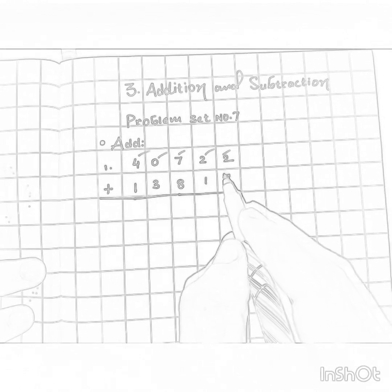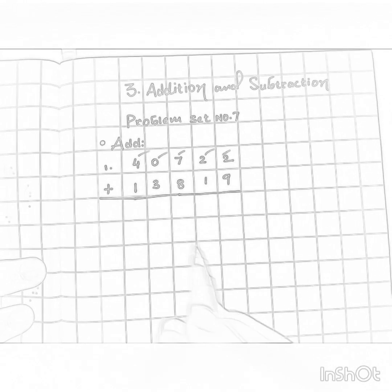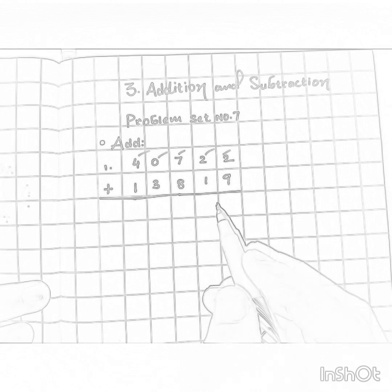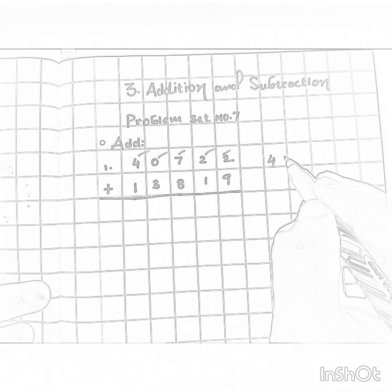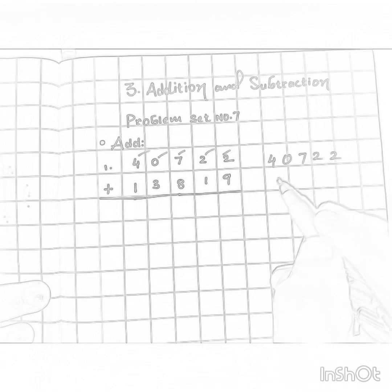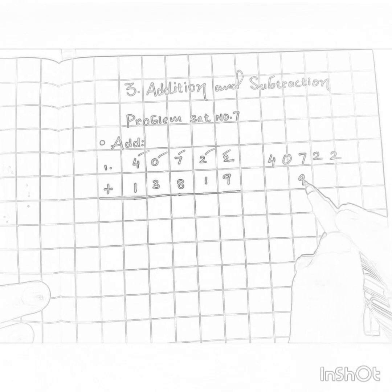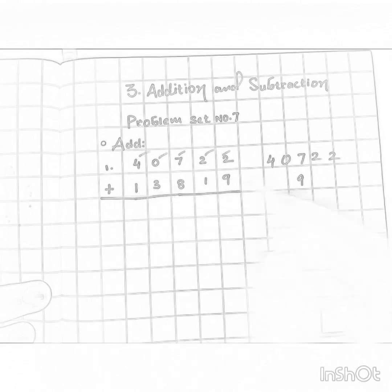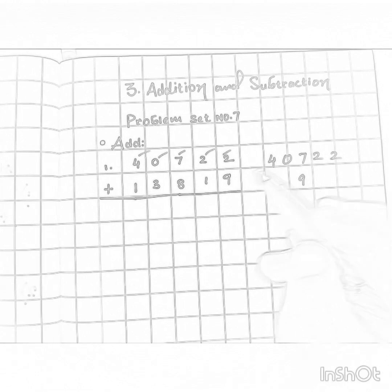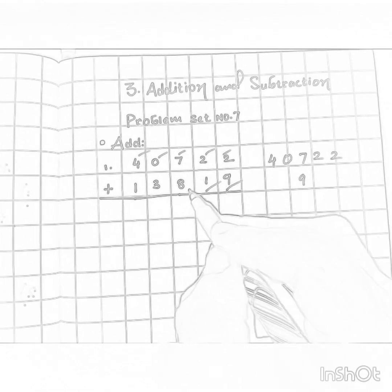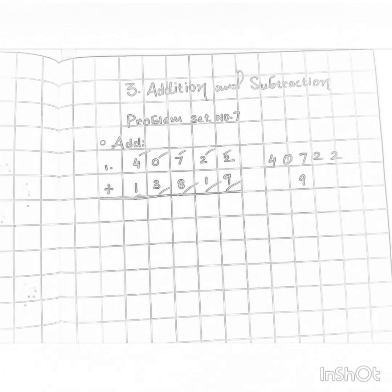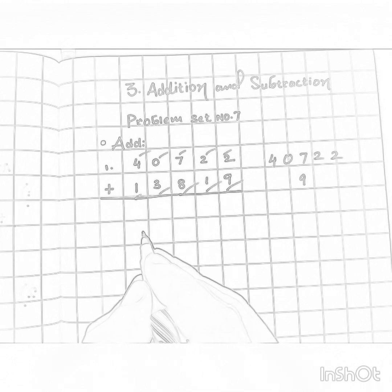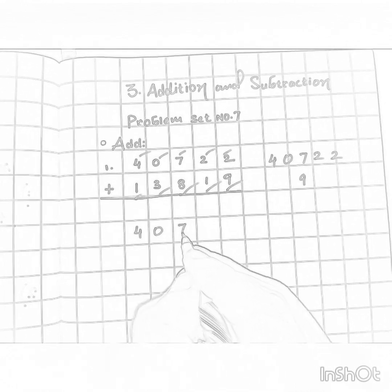This is also a five digit number: ones, tens, hundreds, thousands, ten thousands. You will always write the numbers at their respective places. For example, why have I not written a digit somewhere else? Simply because we have to follow the order: units, tens, hundreds, thousands, ten thousands. Always remember that.